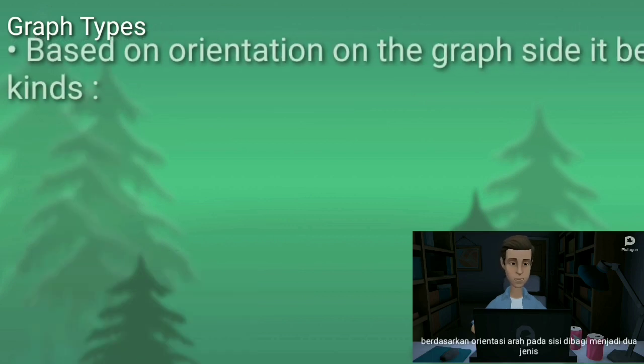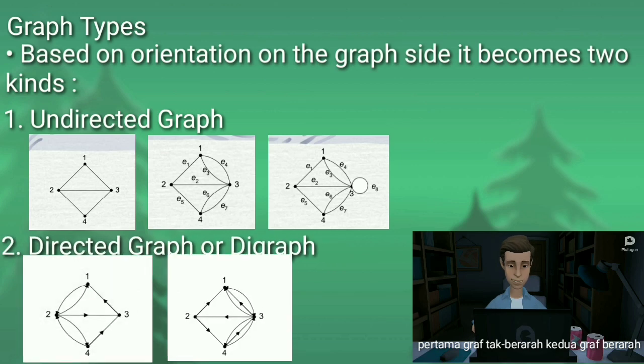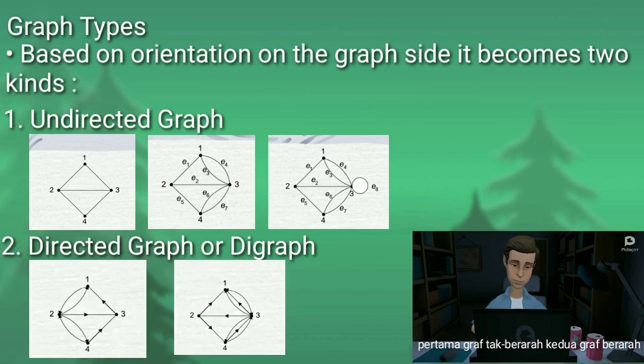Based on the orientation on the graph side, it becomes two kinds. First, undirected graph. Second, directed graph or digraph.